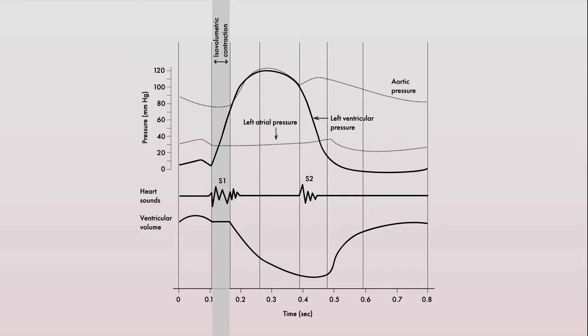The period immediately following this is called isovolumetric contraction, which on this graph is the time period between mitral valve closure and aortic valve opening. It's called isovolumetric contraction because it's the time when the ventricles start to contract and ventricular pressures increase, but there's no change in blood volume within the ventricles.